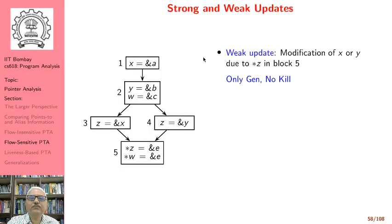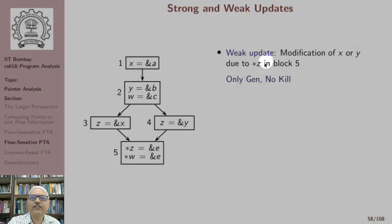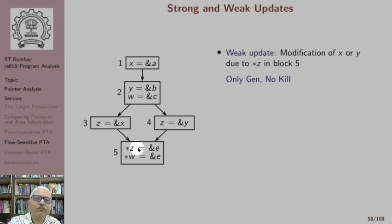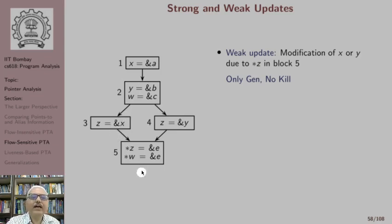Consider the modification of x or y due to star z in block 5. We know that x points to a and y points to b, and z points to x. Because z points to x along this path, star z means x will point to e provided execution happens along this path. On the other hand, because z points to y along this other path, y will point to e if execution happens along that path. So along path 1-2-3-4, x points to a and y points to b; along path 1-2-3-5, x points to e because of this assignment.